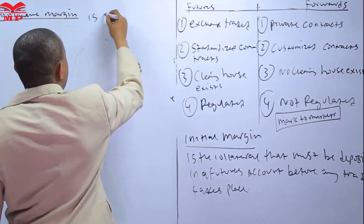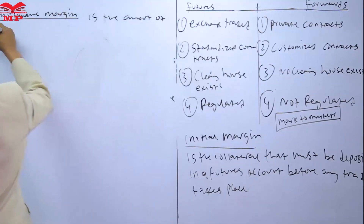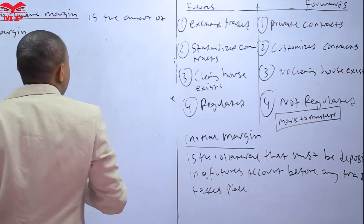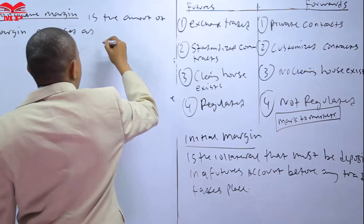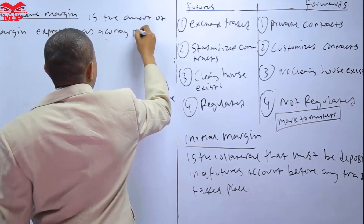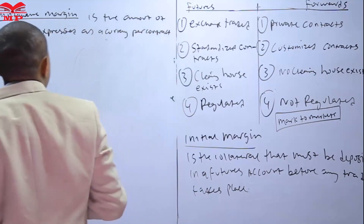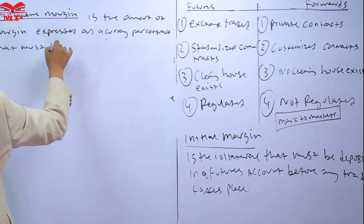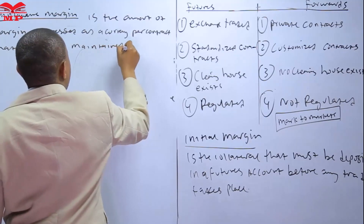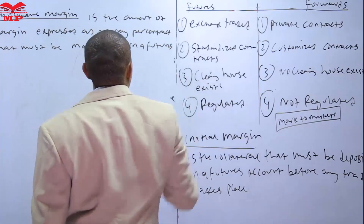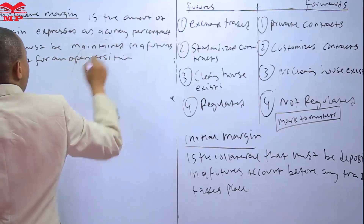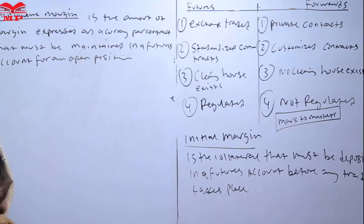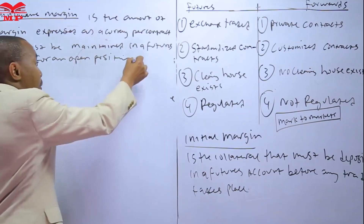The maintenance margin is the amount of margin expressed as a currency per contract that must be maintained in a futures account for an open position — at any given point in time. So when trades are actually taking place, the maintenance margin must have been met.